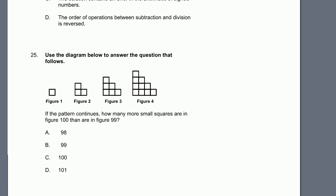Next problem, 25. Use the diagram below to answer the question that follows. Let's see, they're extending by 1 in each direction. They're kind of creating this triangle. If the pattern continues, how many more small squares are in figure 100 than are in figure 99? So let's think, every time we increment it, how many squares are we adding? When we go from 1 to 2, how many did we add? We added 1, 2 squares.